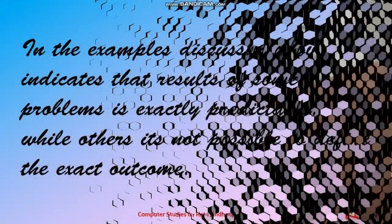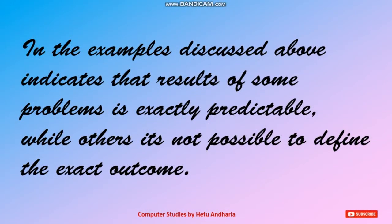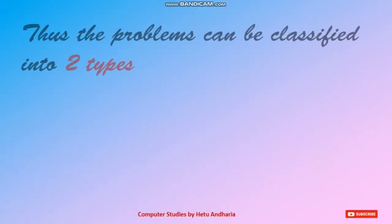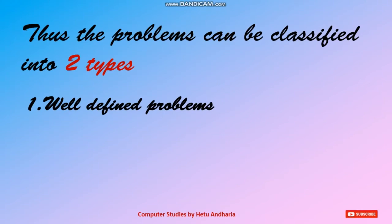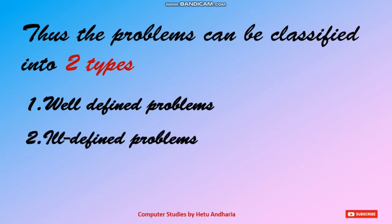The examples discussed above indicate that results of some problems are exactly predictable while in others it is not possible to define the exact outcome. Thus, problems can be classified into two types: the first type is well-defined problems, and the second type is poorly defined or ill-defined problems.